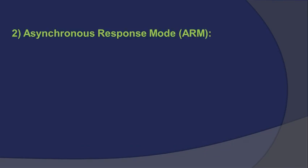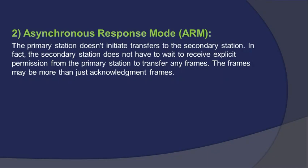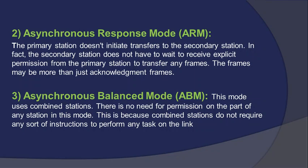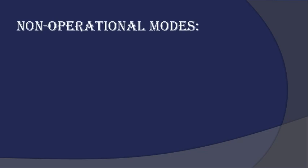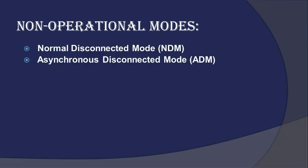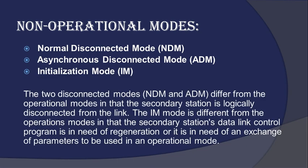Next, we study about asynchronous response mode. In this mode, the primary station does not initiate transfers to the secondary station. The secondary station does not have to wait to receive explicit permission from the primary station to transfer any frames, and the frames may be more than just acknowledgement frames. In asynchronous balanced mode, this mode uses combined stations. There is no need for permission on the part of any station, because combined stations do not require any instructions to perform any task on the link. There are also three non-operational modes: normal disconnected, asynchronous disconnected, and initialization mode. The two disconnected modes differ from operational modes in that the secondary station is logically disconnected from the link, and the initialization mode differs in that the control program is in need of regeneration.